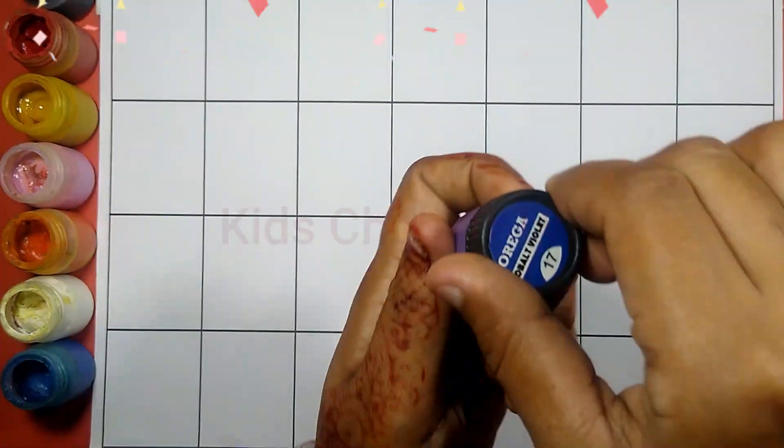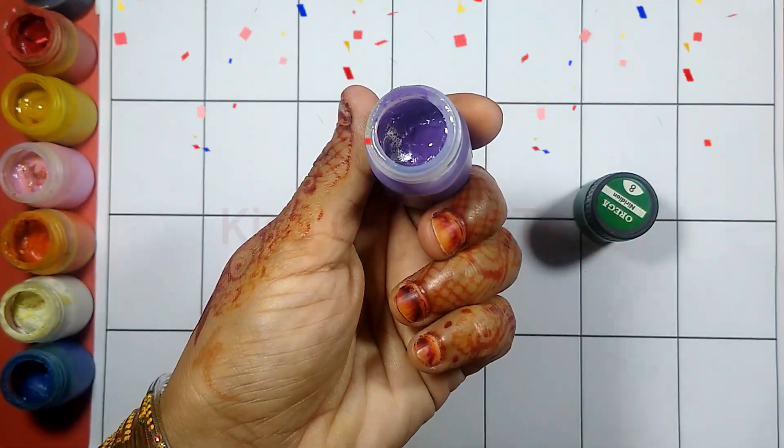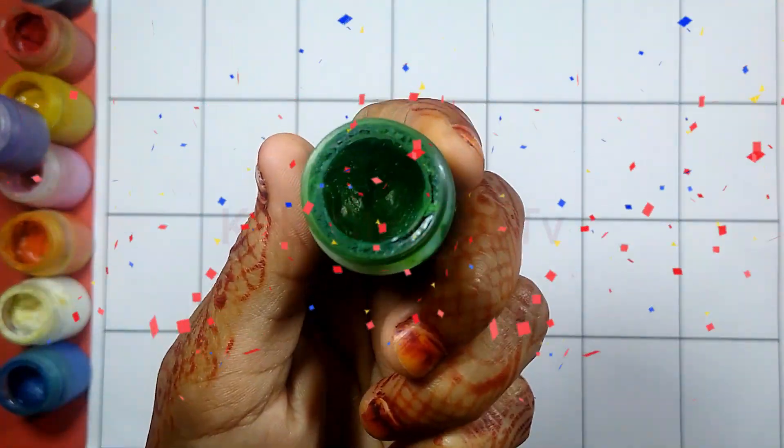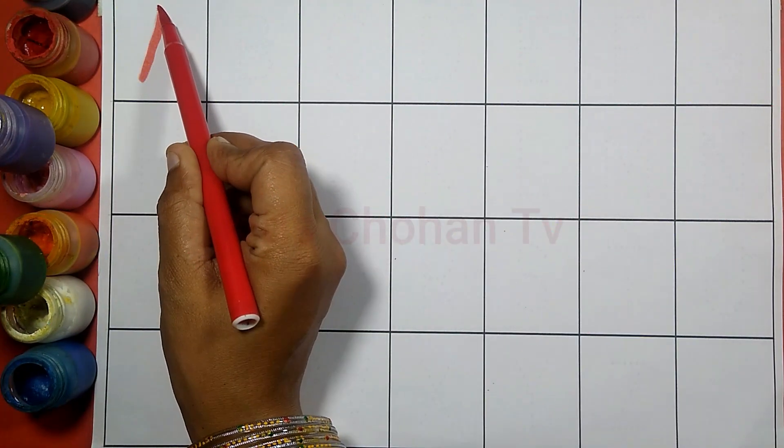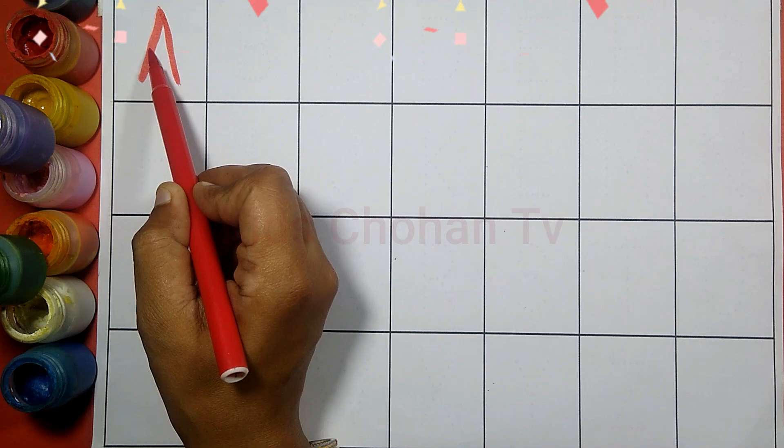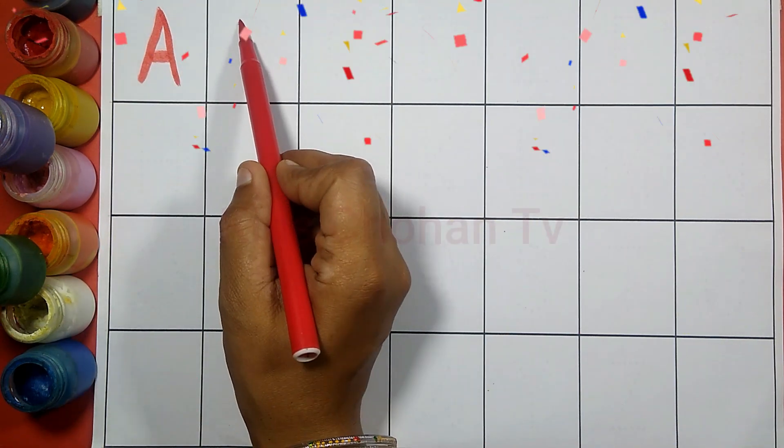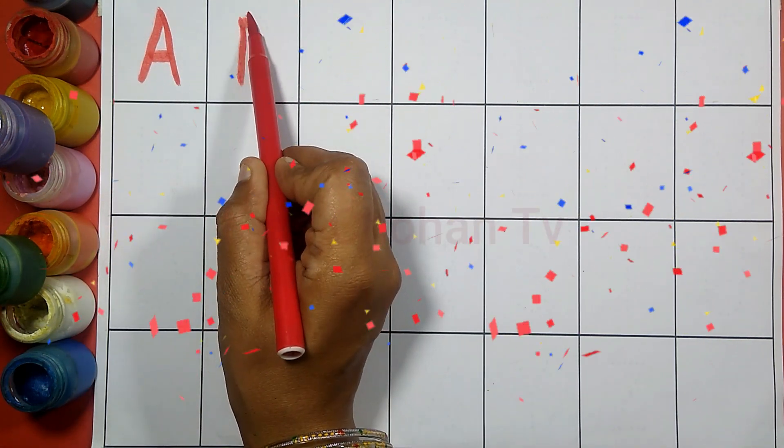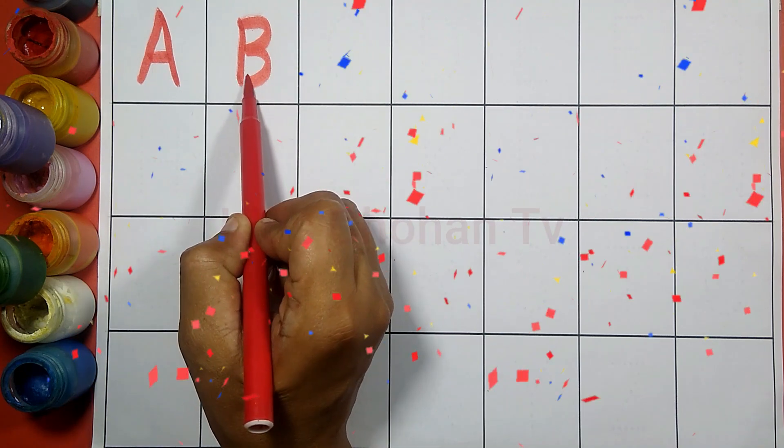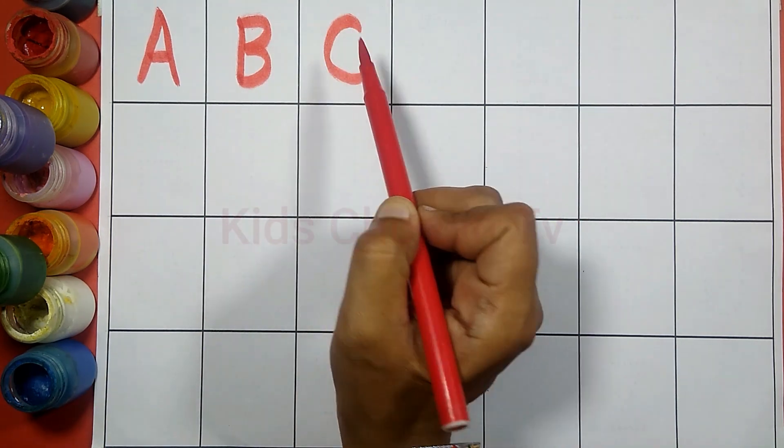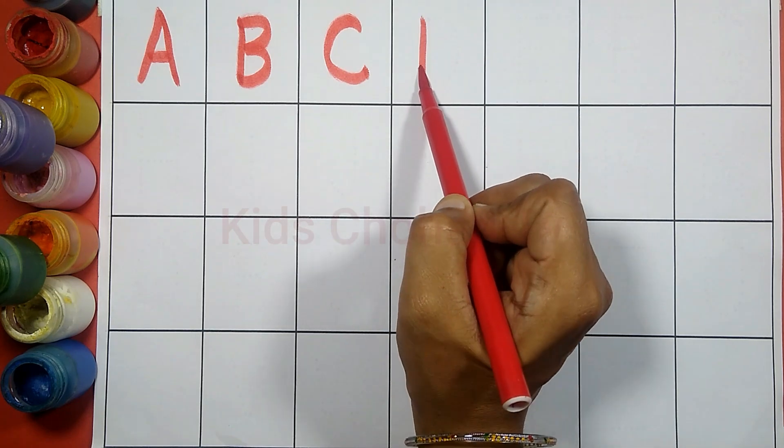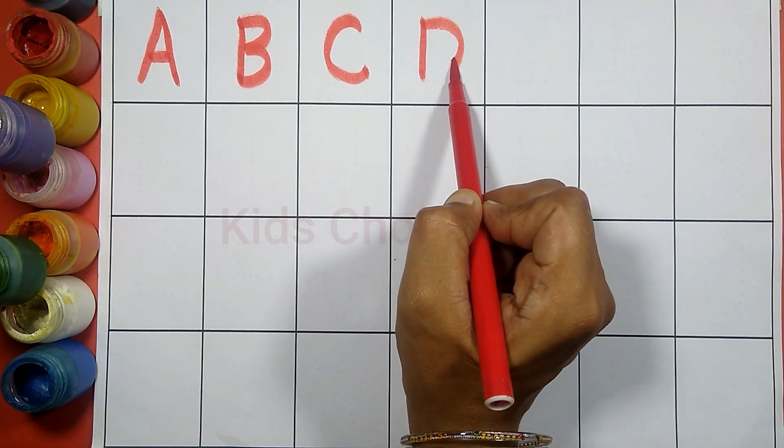Blue color, purple color, and green color. Now start: A for apple, B for bear, C for cat, D for dog.